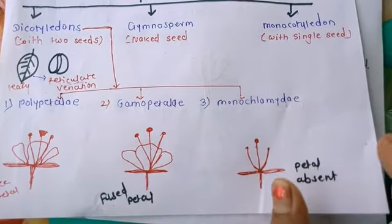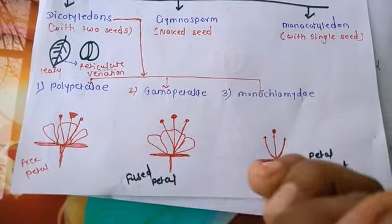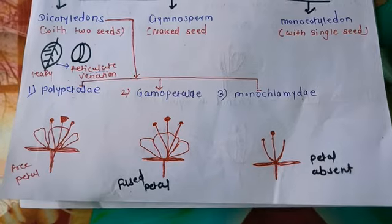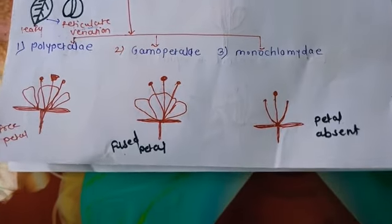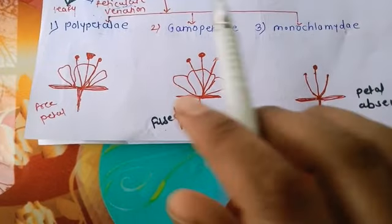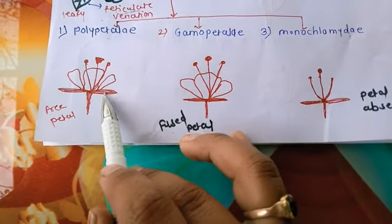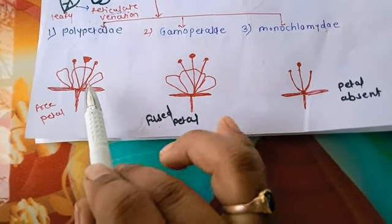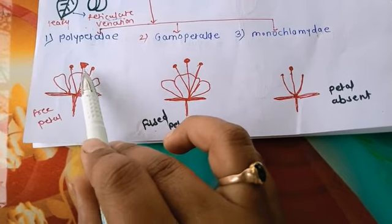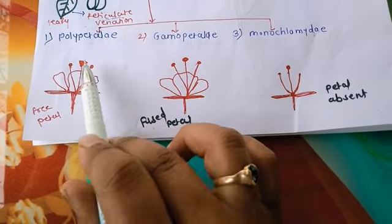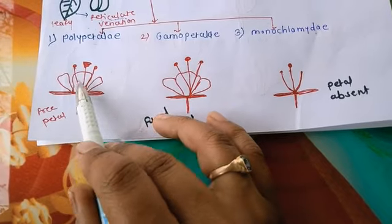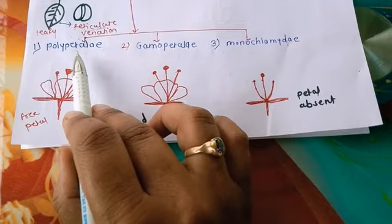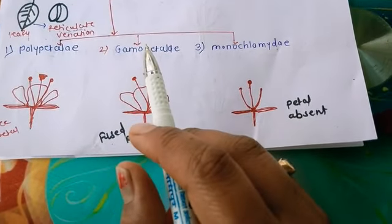Polypetaly means free petals — poly means free, petaly means petals. Looking at the diagram: there are petals, sepals, stamens, and stigma. In polypetaly, the petals are free from each other.